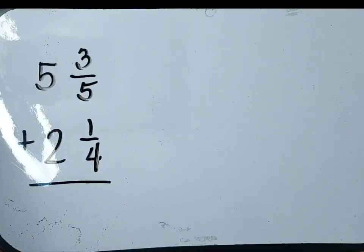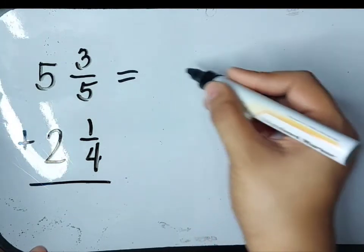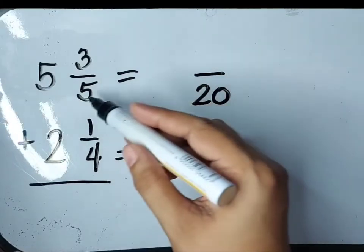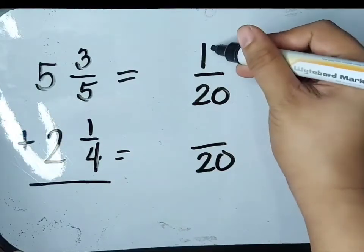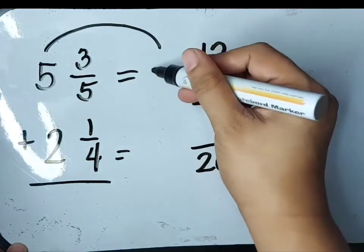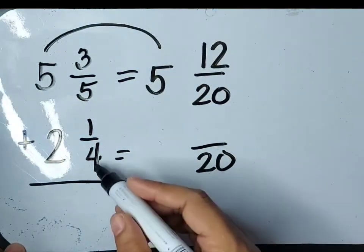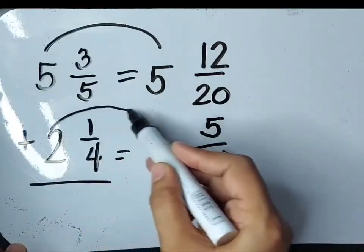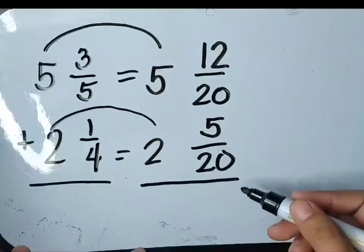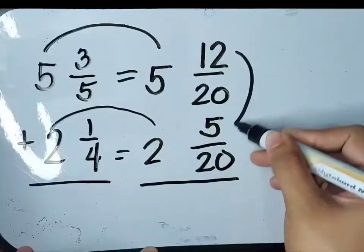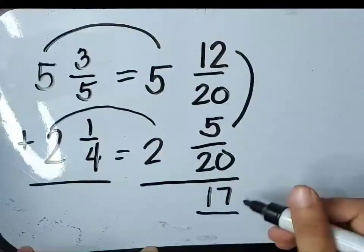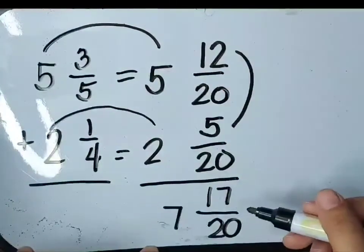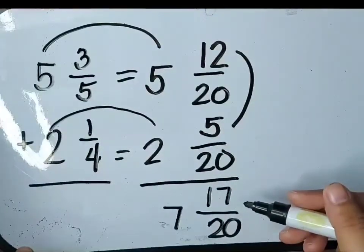Since we know the LCM of 5 and 4, which is 20, let's use 20 as their common denominator. 20 divided by 5 equals 4, times 3, which is 12. Copy the whole number 5. 20 divided by 4 equals 5, times 1, which is 5. Copy the whole number 2. Let's add the equivalent fractions — first the fractions: 12 plus 5 equals 17, then copy the common denominator 20. Then add the whole numbers: 5 plus 2 equals 7. Our answer is 7 and 17 over 20, which is in simplified form.